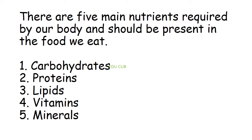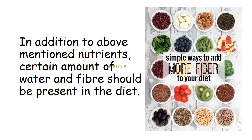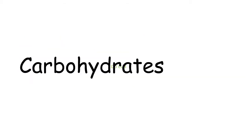Those foods contain five main nutrients in different amounts. There are five main nutrients required by our body that should be present in the food we eat: carbohydrates, proteins, lipids, vitamins, and minerals. In addition to these, a certain amount of water and fiber should also be present in our diet.